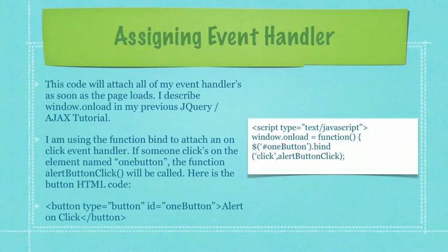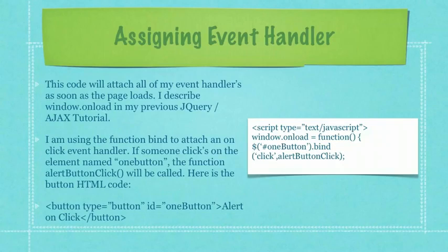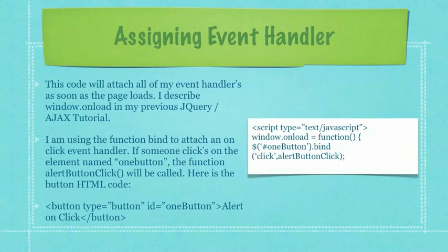I described window.onload in my previous jQuery Ajax tutorial if you want to see more on that. I am using the function bind to attach an on-click event handler. If someone clicks on the element named 'one button', the function alertButtonClick will be called. And here is the HTML code in the bulleted item in the lower left-hand side of the screen that will trigger this event when that button is clicked.